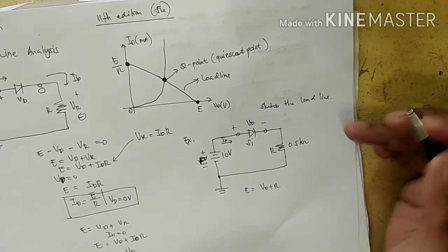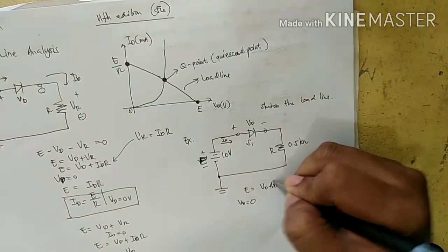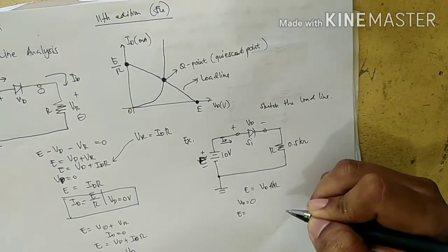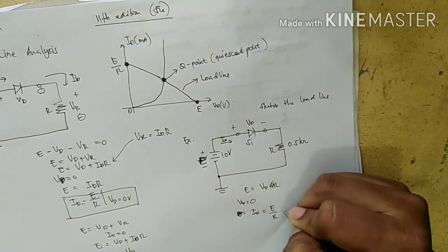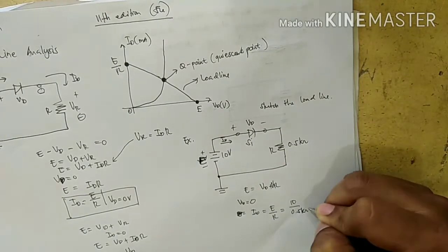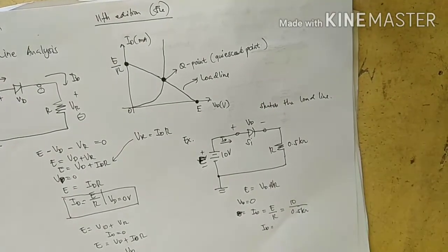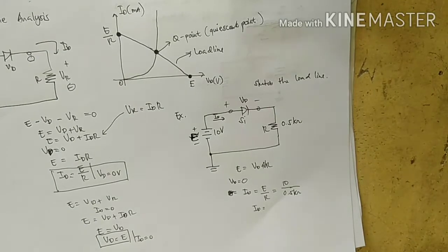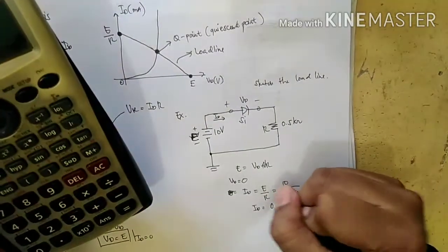Therefore E is equal to ID times R. From the formula, ID equals E divided by R, where E is equal to 10 divided by 0.5 kilohms. So therefore ID, this is 10 divided by 0.5 kilohms, this is equivalent to 500 ohms. You need to write the unit. Unit is very important. So therefore 10 divided by 500, this is equal to 0.02 amps.